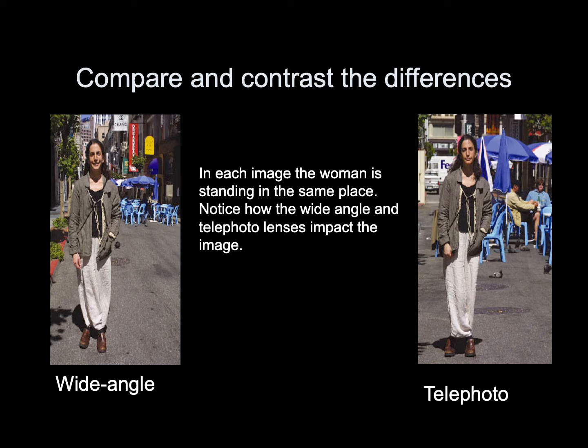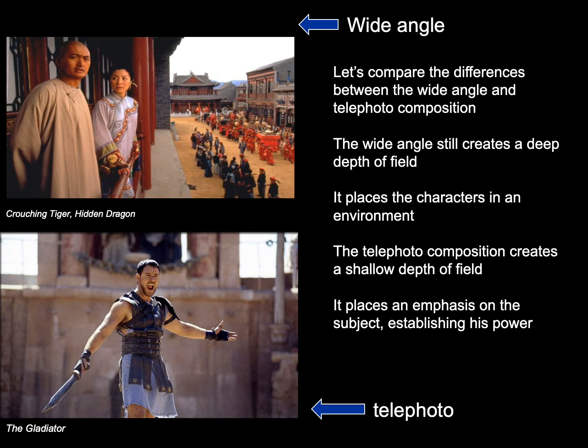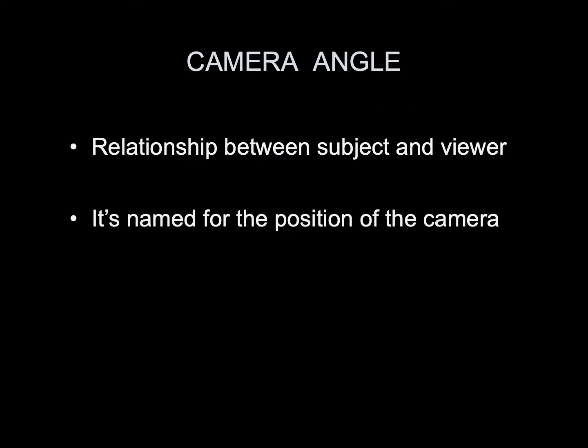Compare and contrast the differences: in each image, the woman is standing in the same place. Notice how the wide-angle lens and telephoto lens impact the image differently. The wide-angle composition creates a deep depth of field and places the characters in an environment. The telephoto composition creates a shallow depth of field and places emphasis on the subject, establishing his power.